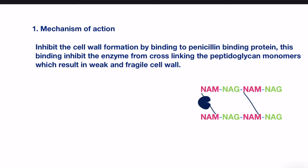As a typical beta-lactam, cephalosporins work by inhibiting the cell wall formation. By binding to penicillin-binding protein, or the transpeptidase, this binding inhibits the enzyme from cross-linking the peptidoglycan monomers, which results in a weak and fragile cell wall. As you can see here, this enzyme links these two peptidoglycan chains to form a rigid cell wall. Cephalosporins inhibit the action of this enzyme, resulting in a weak cell wall in which the peptidoglycan chains are not interlinked by peptide linkage.